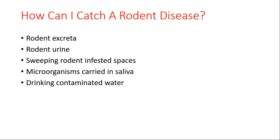Routes also include handling of infected rodents by hunters or other people, bites from rodents — where microorganisms carried in saliva can infect both humans and other rodents — and drinking contaminated water or eating contaminated food.